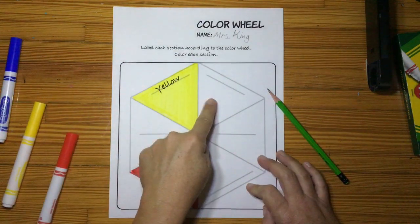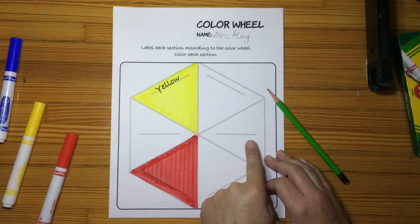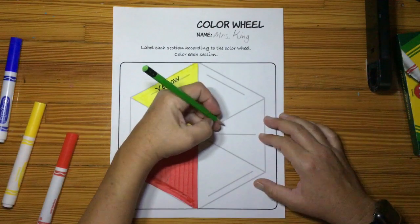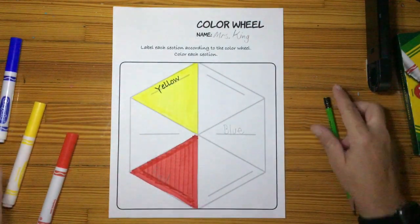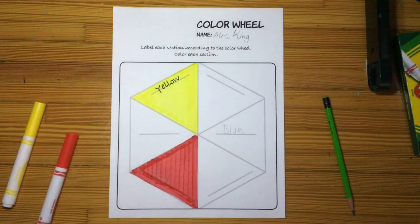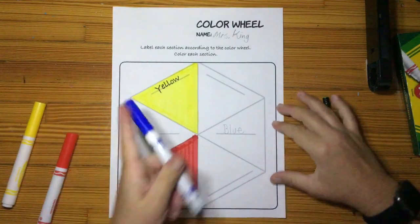Now we skipped this space, and right here I want you to write blue, B-L-U-E. Take your blue marker and color that section blue.